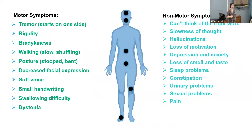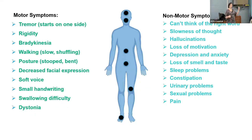A really common non-motor symptom is what we call bradyphrenia — slowness of thought. This doesn't mean you're developing dementia; it's just that things take a little bit longer because the brain has changed. Dopamine is really important for quick thinking, so when you don't have enough dopamine, thoughts come more slowly — similar to what's happening in your body where it takes longer to move. This is very common even early in the disease.